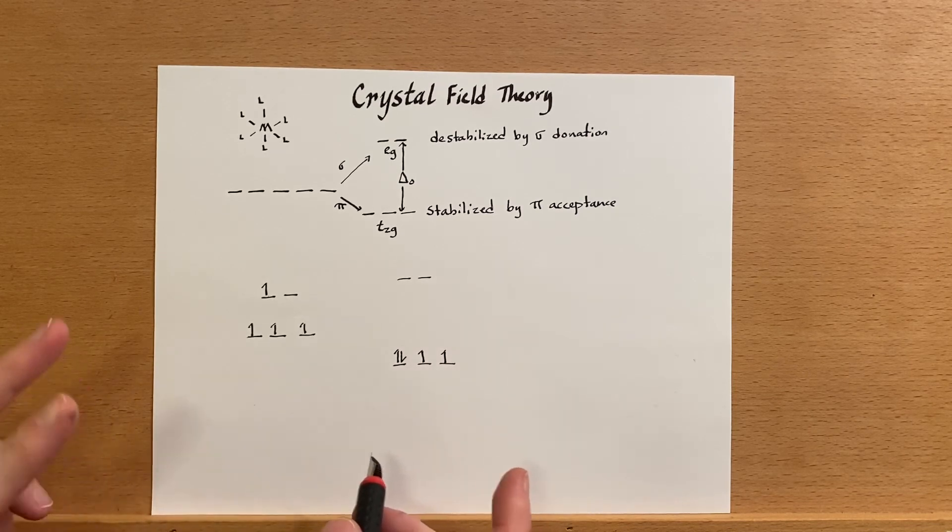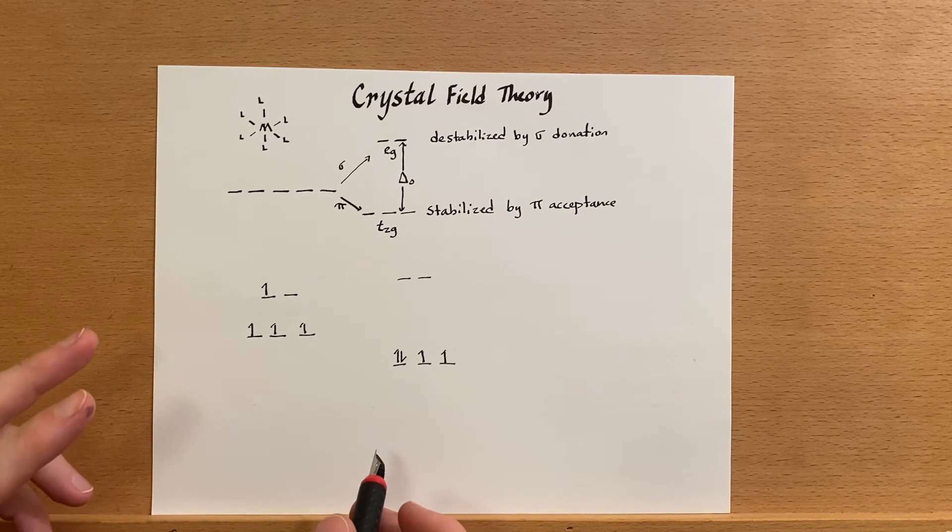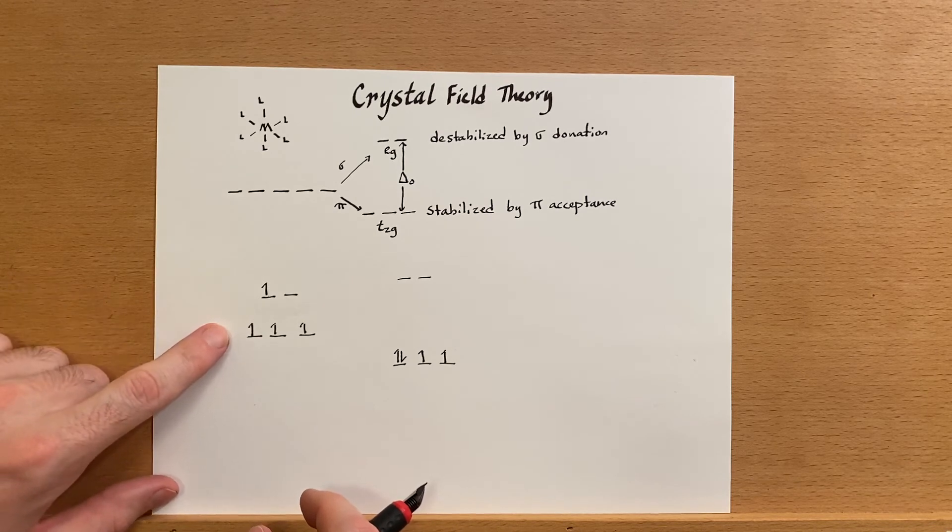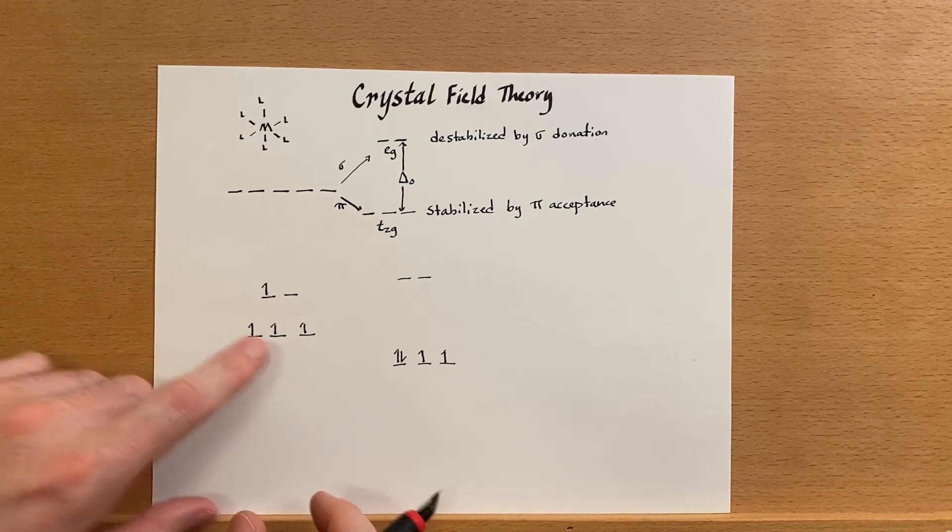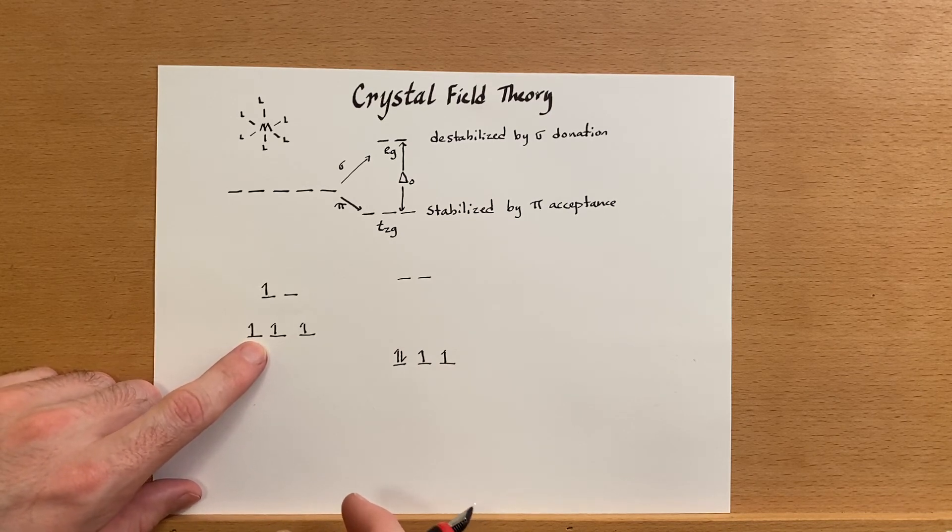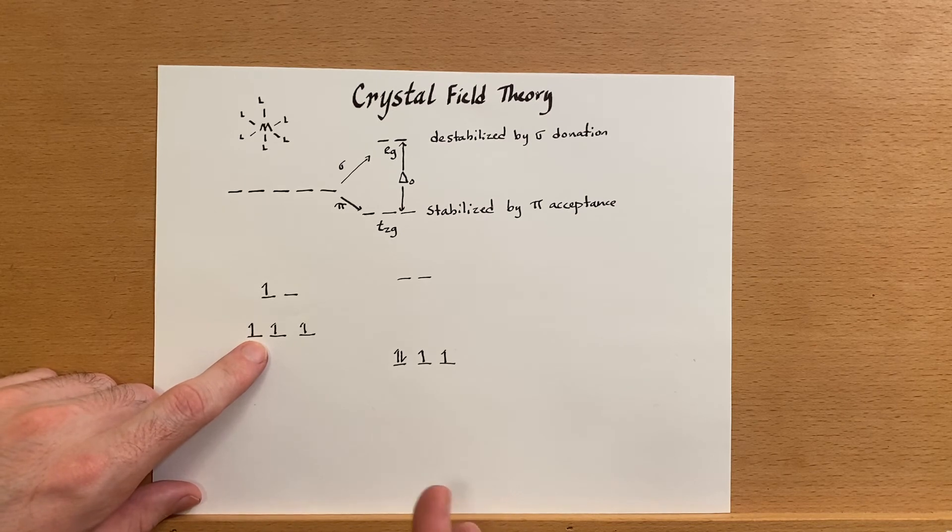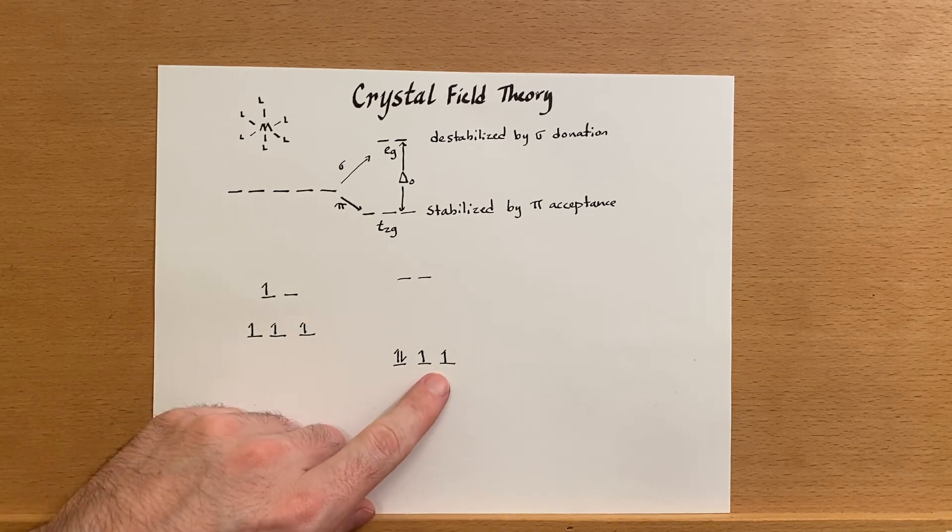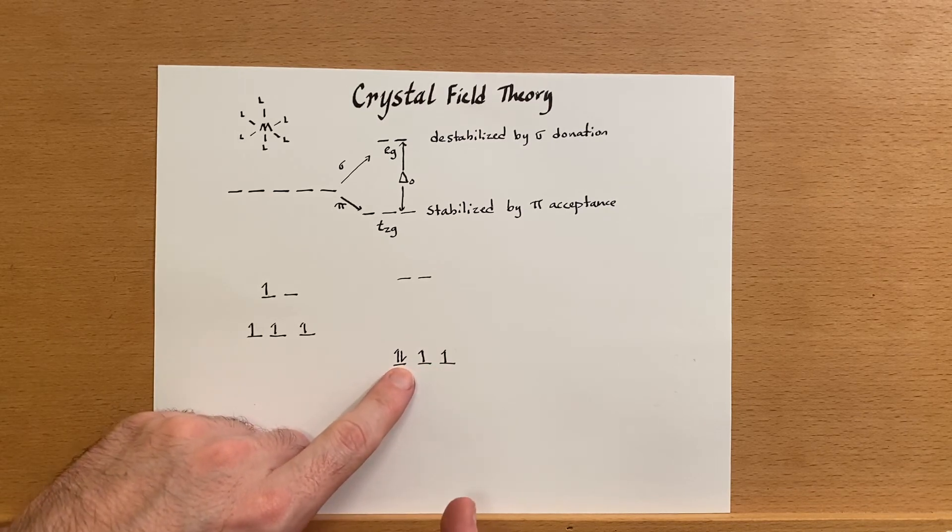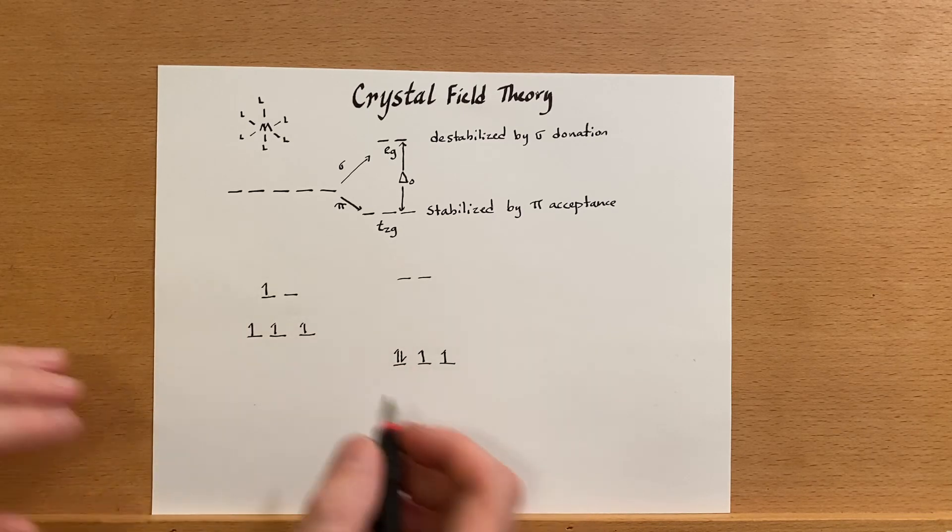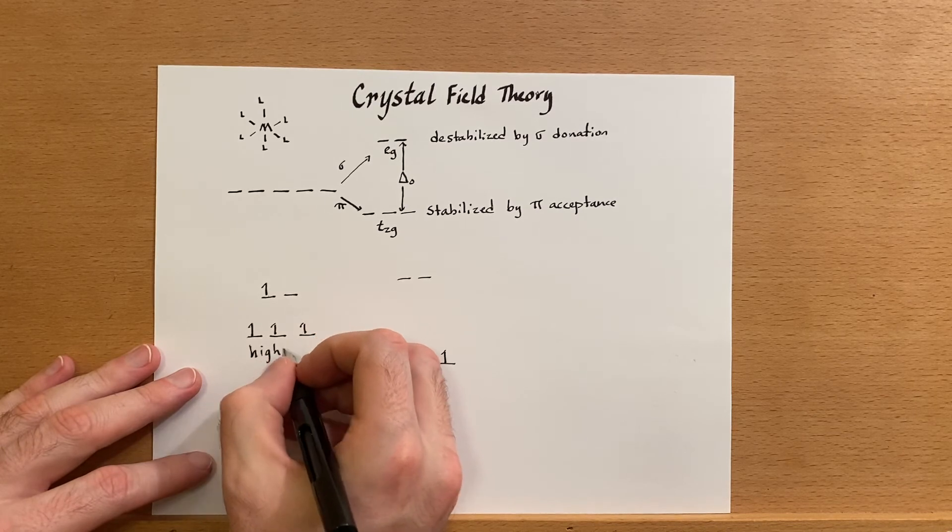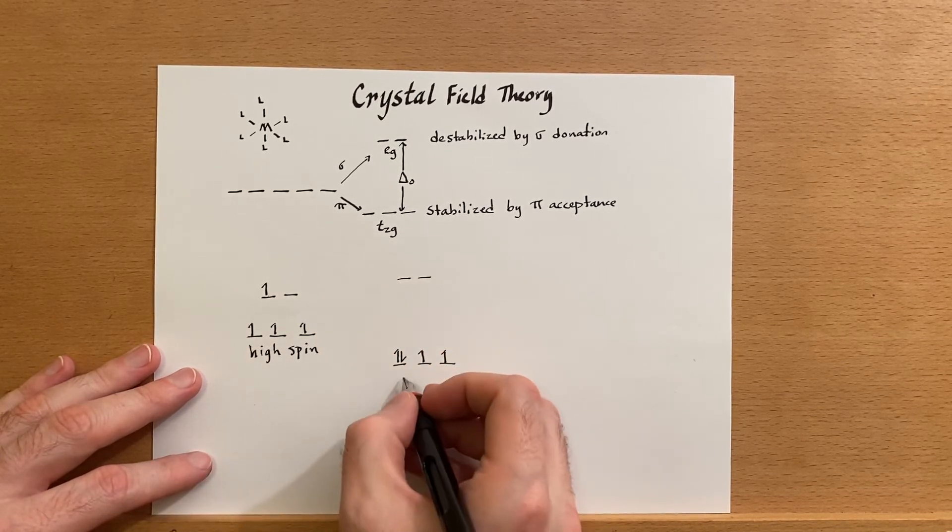Now there's two names for these kinds of configurations. In this case it's called high spin and this one's called low spin. This one's called high spin because it has more unpaired electrons, thus more electron spin. This case has only two unpaired electrons because two of them are paired now. So this is high spin, low spin - this is low spin.